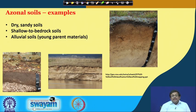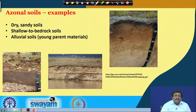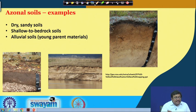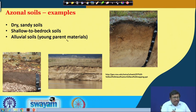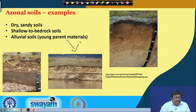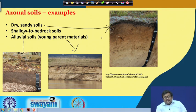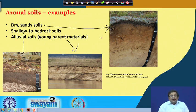Azonal soils, or abnormal soils, are too young to have developed into true zonal soils. Examples include dry sandy soils, shallow-to-bedrock soils, and alluvial soils — all young parent materials. In these soils, you will not see proper soil horizonation; in other words, soil horizons are not easily visible and there are no properly developed master horizons. That is why they are called young soils or poorly developed soils.